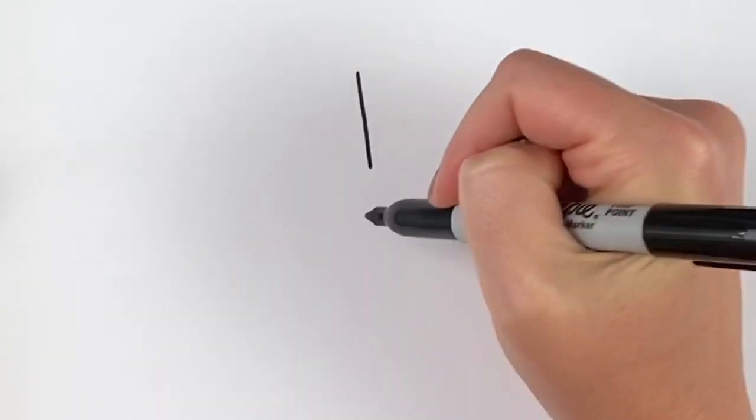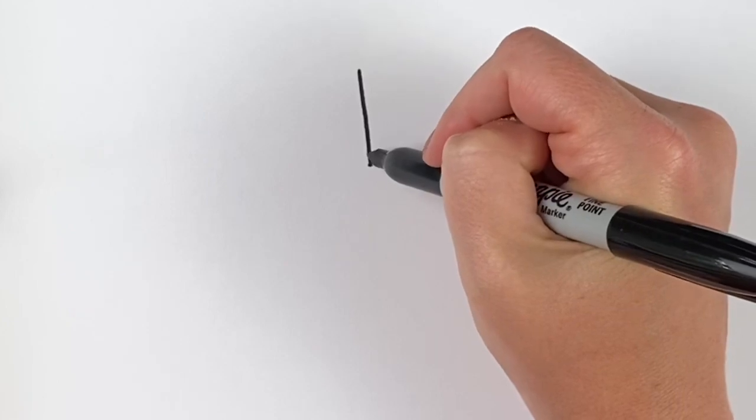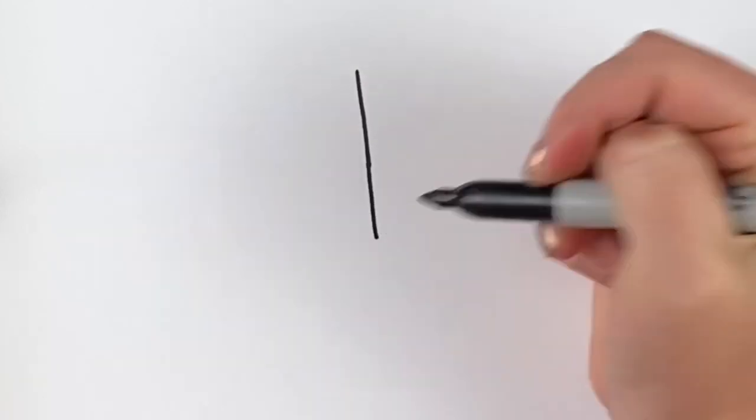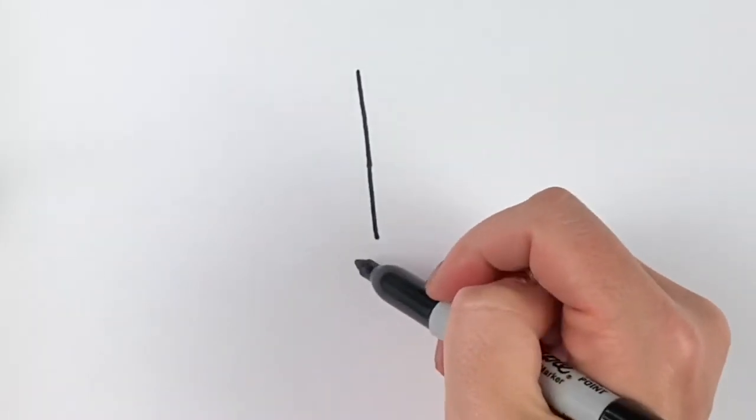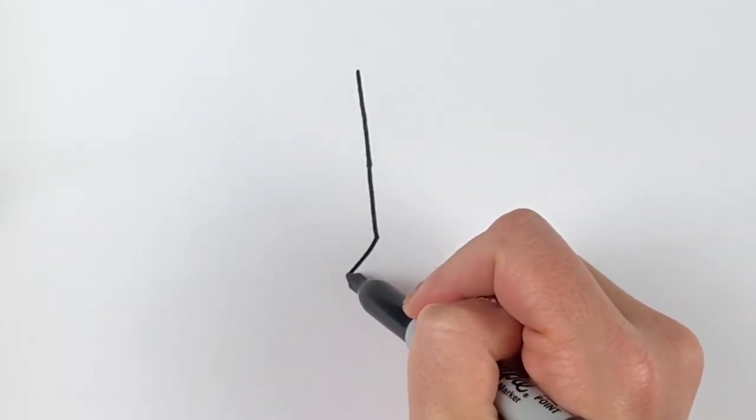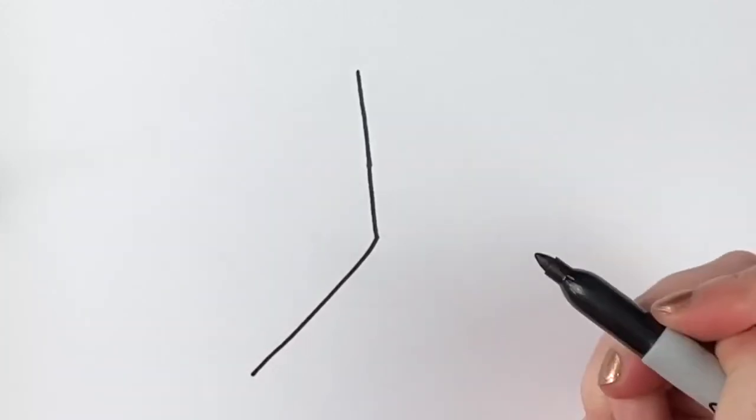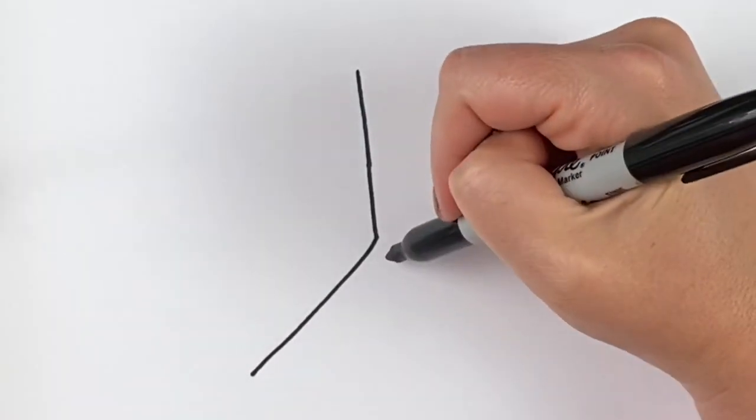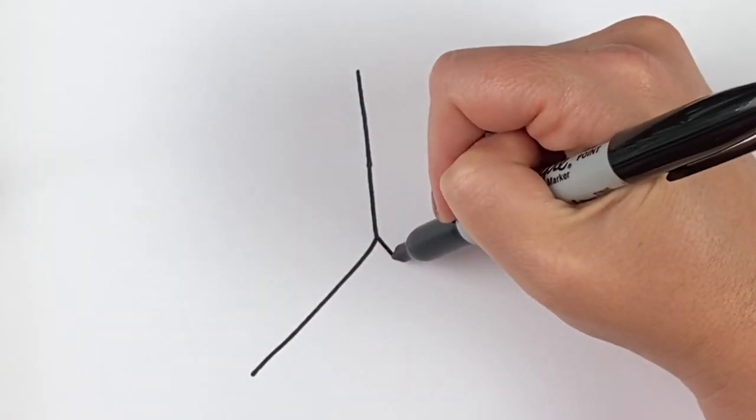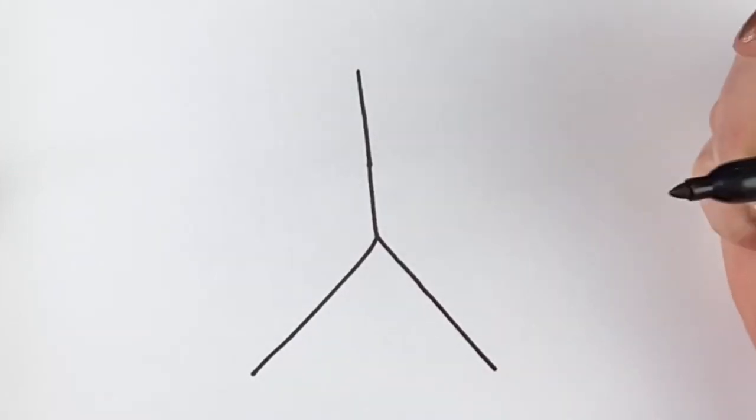So first, you're going to draw a straight line coming down, and then you're going to have two lines coming out of the bottom to make it look like an upside down Y. As much as possible, you want these lines to all be about the same length. So I'm going to do another one on this side and give myself an upside down Y.